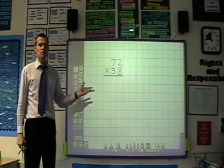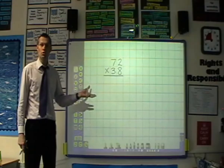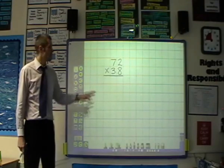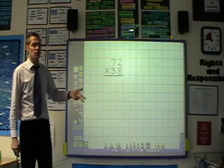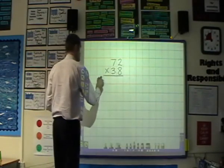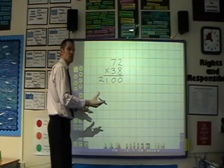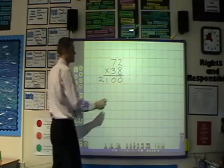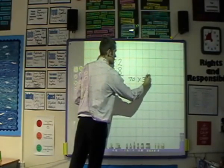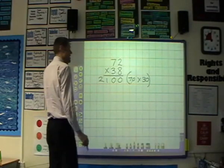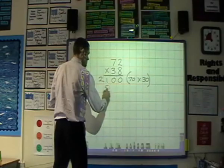This partitioning method can also be applied to long multiplication where we multiply numbers by more than one digit like in this example here. So the children may well multiply 70 by 30 to start with which is 2100, and initially they may put in brackets what they are doing at each stage, so that would be 70 times 30. They would then probably multiply 70 by 8 which is 560.